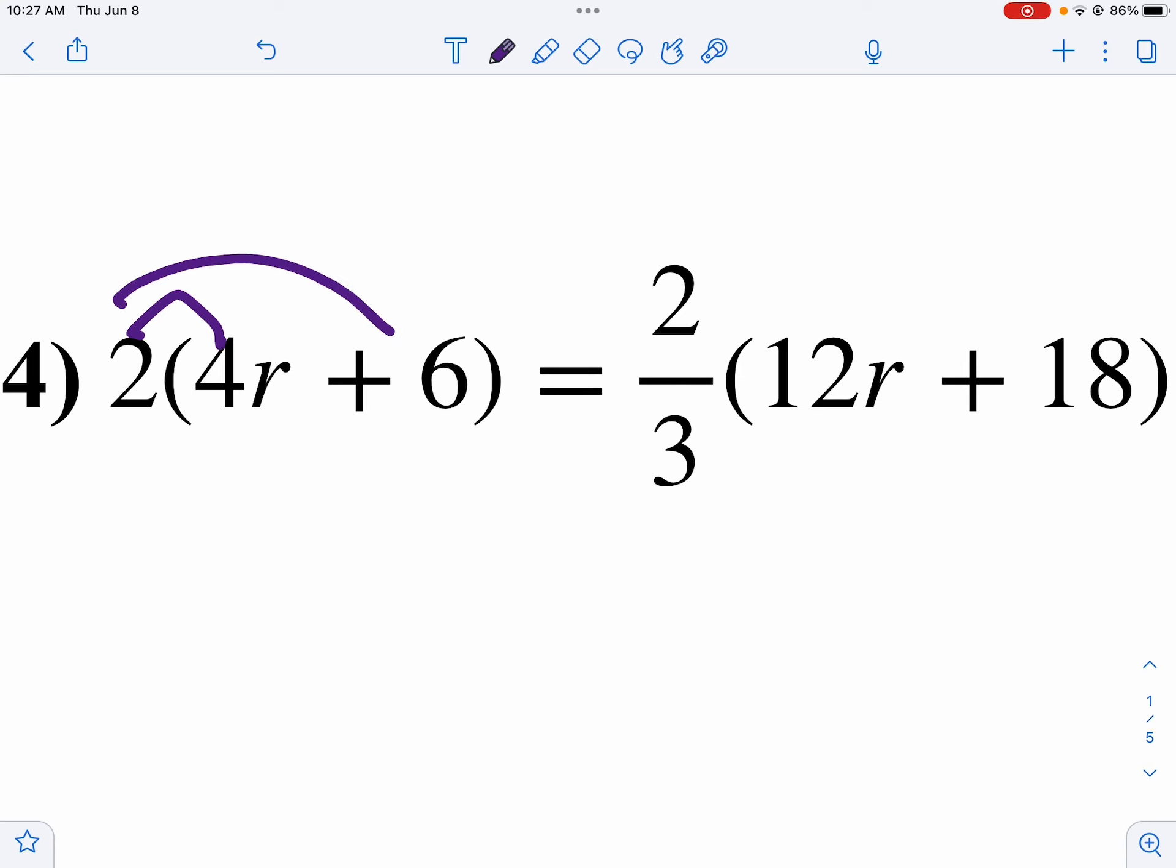Distribute the 2 inside, we get 8r plus 12. On the right side, I'm going to distribute my 2 thirds inside, because it's easy to multiply by fractions. I wouldn't suggest you get rid of the fractions yet.